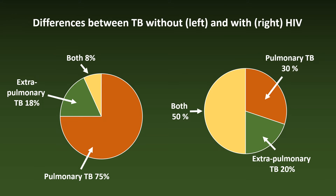This graph illustrates the differences between TB without — on the left — and with — on the right — HIV. Without HIV, most cases of TB are limited to the lung, but that is emphatically not true if TB is combined with HIV.